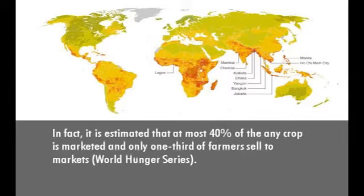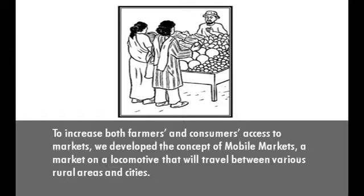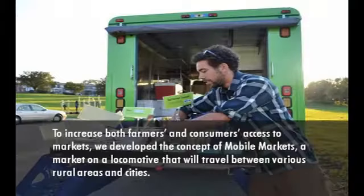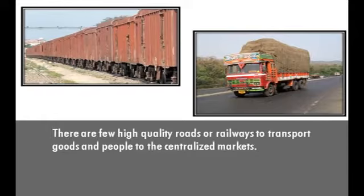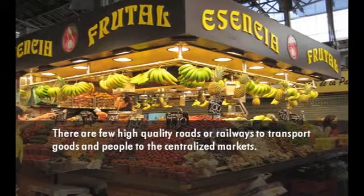To increase both farmers' and consumers' access to markets, the concept of mobile markets is developed — a market on a locomotive that will travel between various rural areas and cities. In developing nations, transportation is often very limited. There are very few quality roads or railways to transport goods and people to the centralized markets.